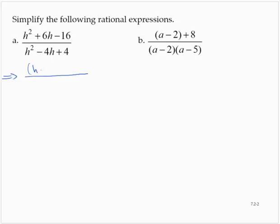The factored form for the numerator is h minus 2 by h plus 8. For the denominator, h squared minus 4h plus 4, that's h minus 2 times h minus 2, or h minus 2 squared.